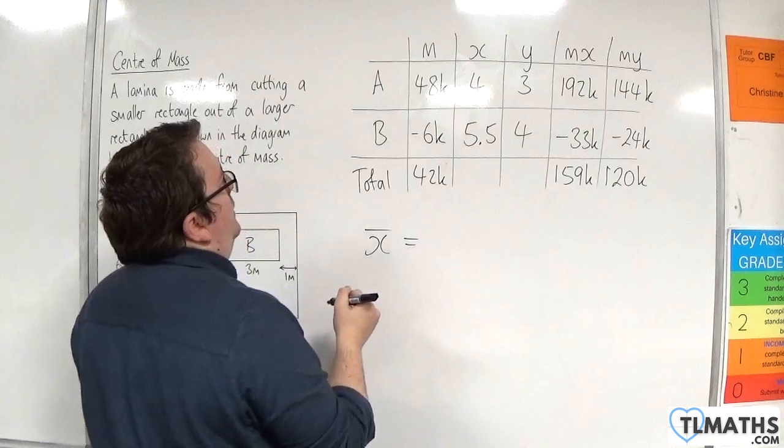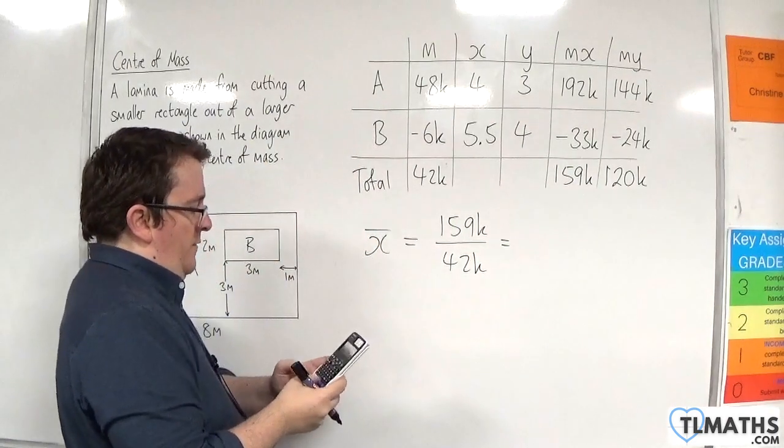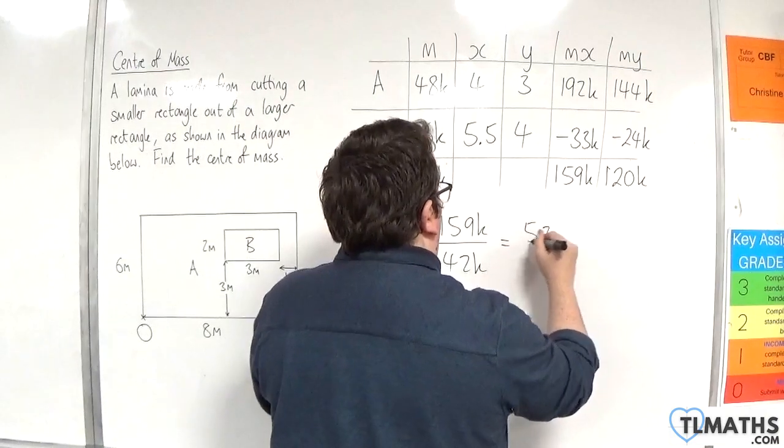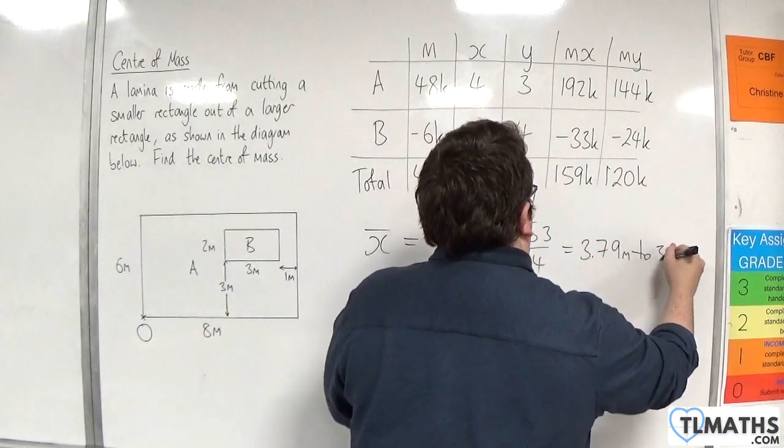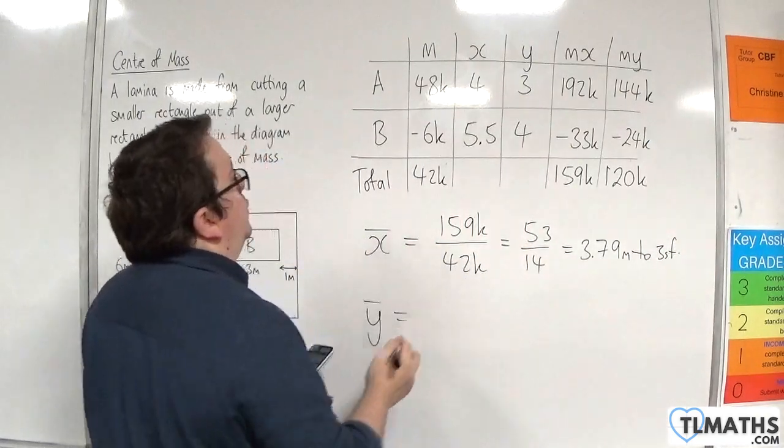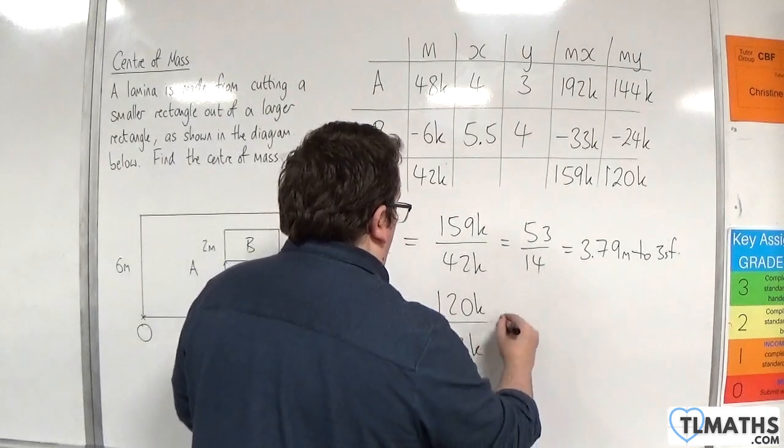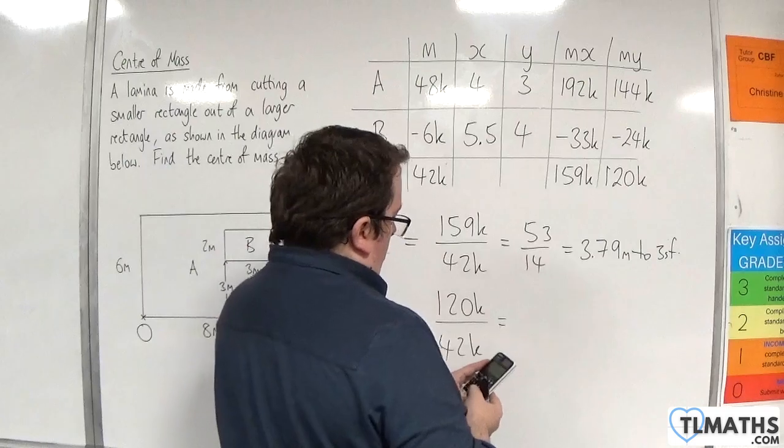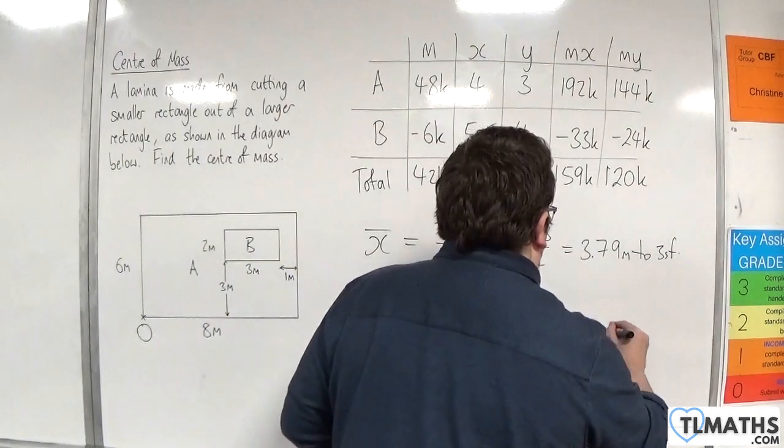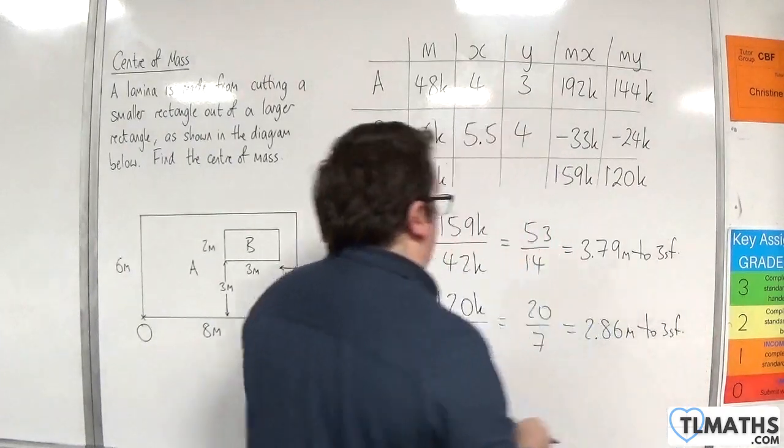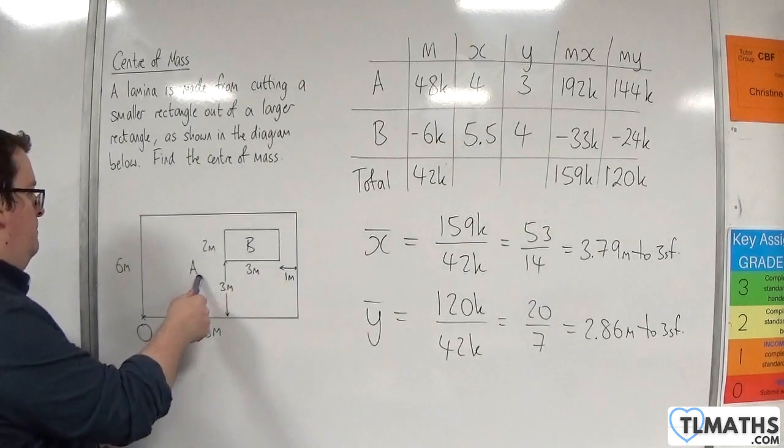So, the average for the X's will be 159k over 42k. So, 159 over 42, which is 53 over 14, which is 3.79 metres to 3 significant figures. So, the average for the Y's is 120k divided by 42k, which is 20 over 7, which is 2.86 metres to 3 significant figures. So, it's roughly somewhere over here, I'd say.